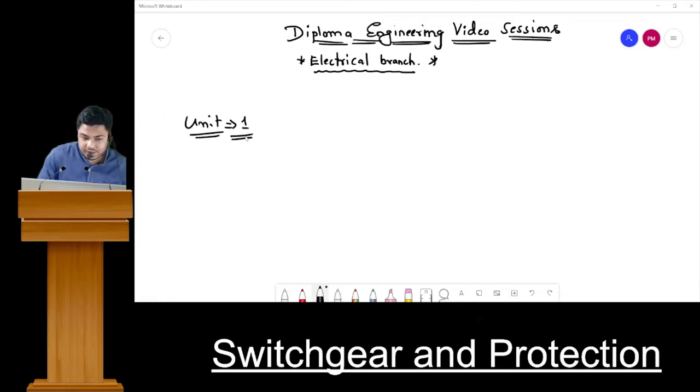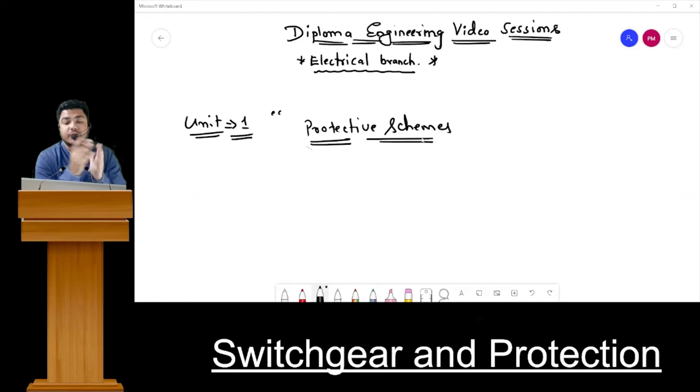So let me assign the name Unit 1. First, dear students, we are going to discuss in the first module various kinds of protective schemes. But before starting with the various kinds of protective schemes, I will explain what the term switchgear is all about, why there is a necessity, why there is a need of protection for a particular system, and if we will not give the protection then what will happen.